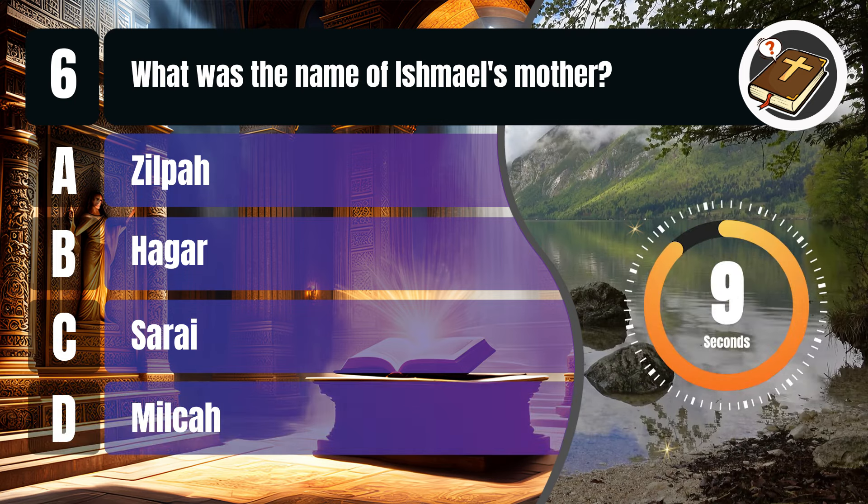Question 7. Who intercedes for Sodom when he learns God intended to destroy the city? A. Lot. B. Terah. C. Abraham. D. Moses. You get 10 seconds.